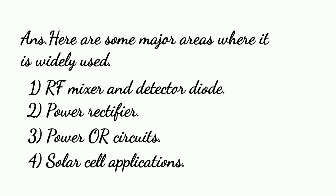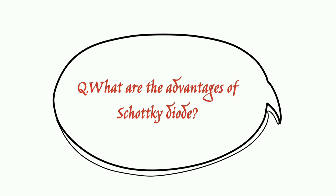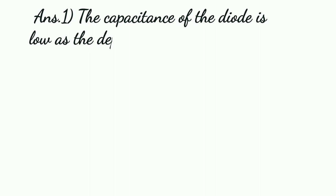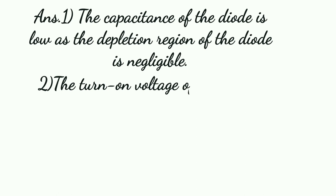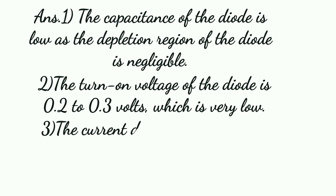What are the advantages of Schottky Diode? The capacitance of the diode is low as the depletion region of the diode is negligible. The turn-on voltage of the diode is 0.2 to 0.3V, which is very low. The current density of the diode is high as the depletion region is negligible.